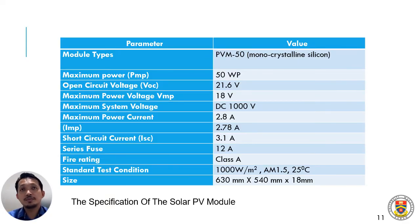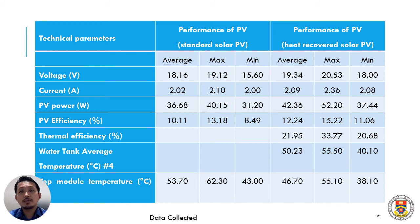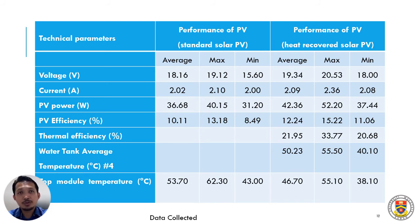Here are the specifications of the solar PV used in this study. This is the data collected during the experimental work. The middle column shows the performance of the solar PV without the cooling system, whereas the right-hand side shows the performance of the solar PV with heat recovery and the cooling system. The average maximum and mean performance are shown here, and for the solar PV with heat recovered, we also have the thermal efficiency, water tank average temperature, and the surface temperature of the solar PV. From here, you can see differences in temperature, efficiency, and water temperature.